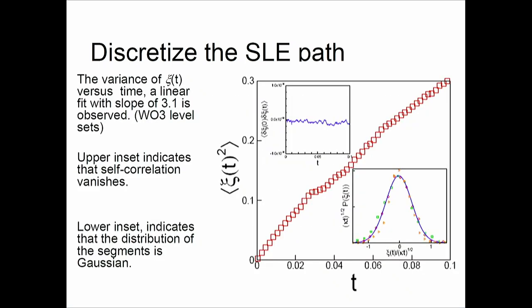Now the question is: is it a normal distribution? Because this has to be a Brownian motion. So it has to give mean zero and a linear autocorrelation, with zero correlation when I shift time — which it does. The slope of this path is 3.1, which means this is a path happening in the critical Ising model, because kappa = 3 gives the Ising model.